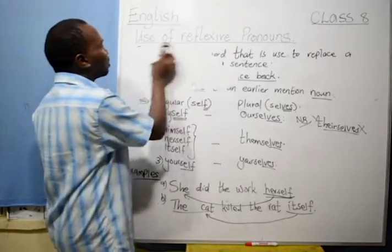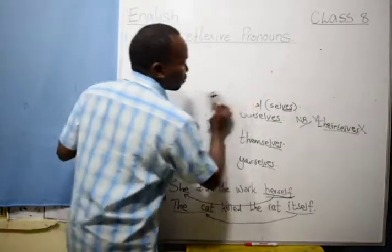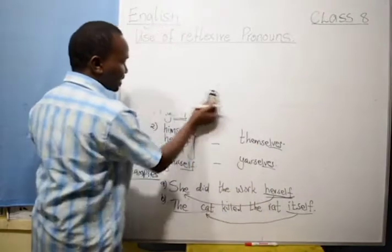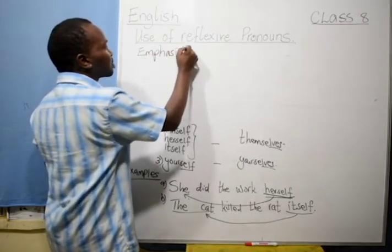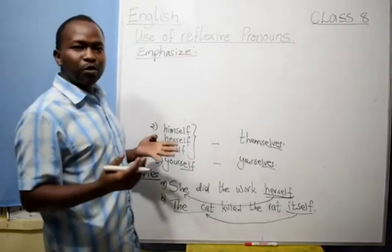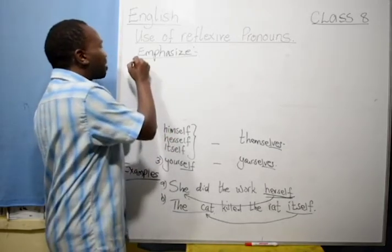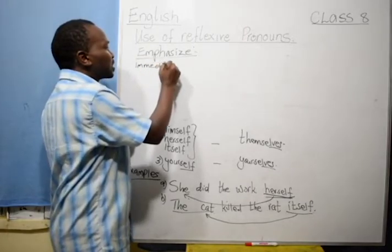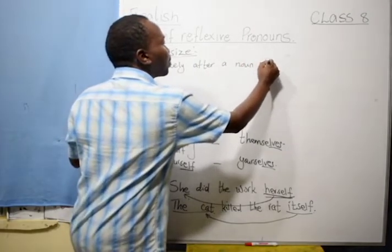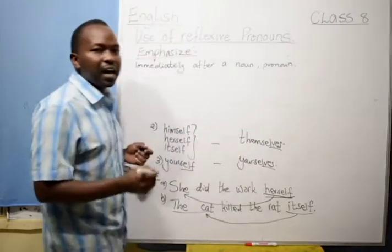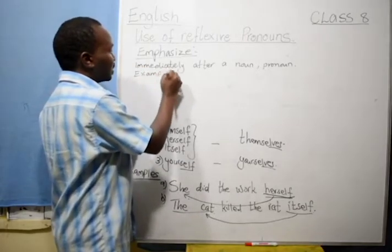Now, there is one other form of the use of the reflexive pronouns. That is, they are used to emphasize. How do you use the reflexive pronouns to emphasize in a sentence? When you use a reflexive pronoun immediately after, use it immediately after a noun or pronoun. When it comes immediately after a noun or a pronoun, it is used to emphasize. For example, in a sentence.